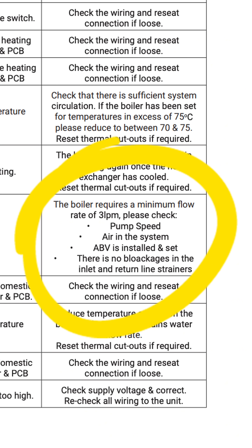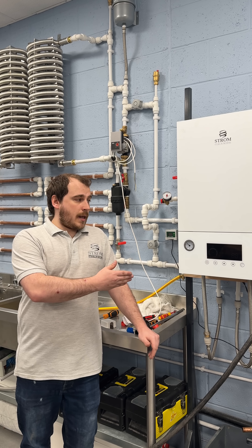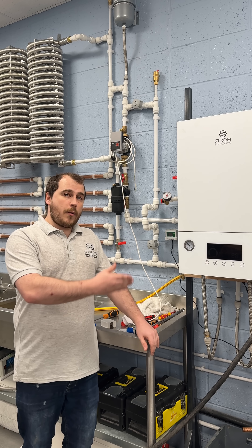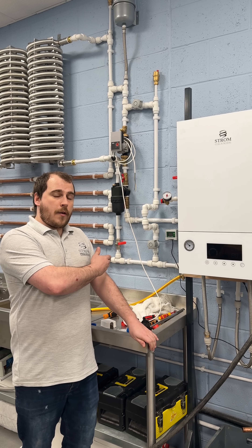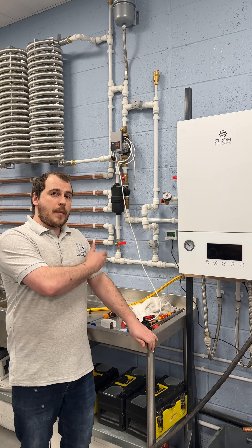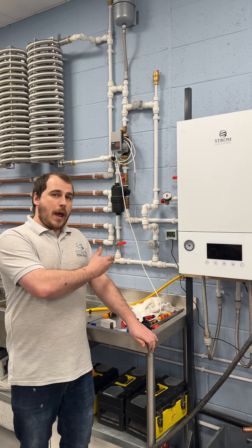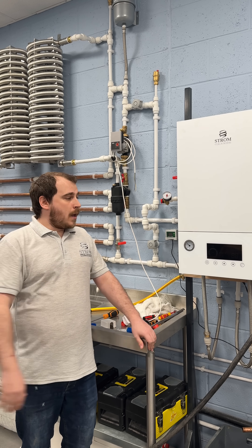We need to ensure that we've always got a flow rate of 3 litres a minute or above within the heating system, otherwise we see this E5 error code. I'm going to reset this error code and then we're going to demonstrate on this heating system how and why it would trigger.